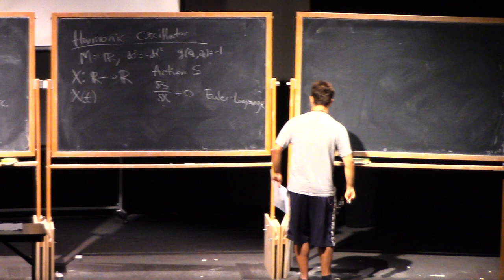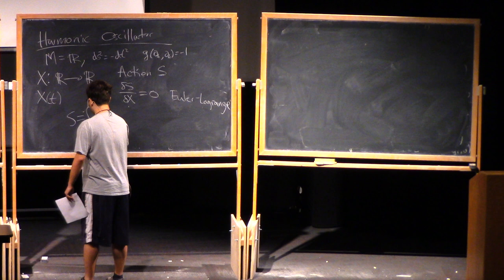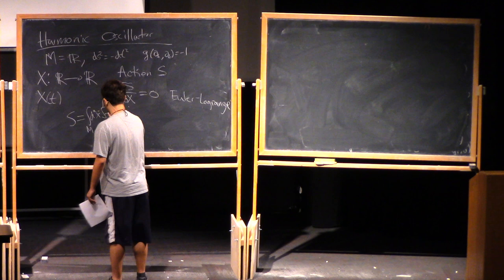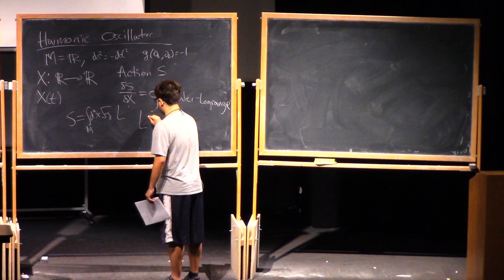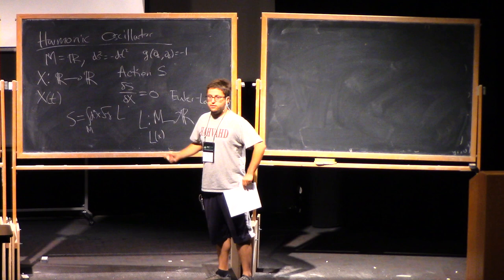Okay, so in this particular example of the harmonic oscillator... Oh, so in general, by locality, the action will always be the integral of some Lagrangian. So S equals integral over M of your volume form times the Lagrangian, where the Lagrangian is some function from M to the real numbers. And importantly, L(x) only depends on the fields and their derivatives at that point x. That's what I mean by locality.